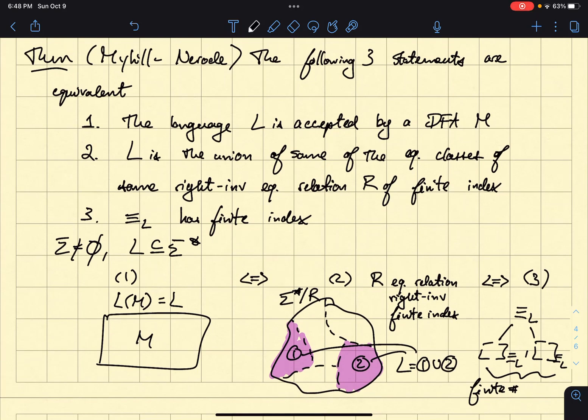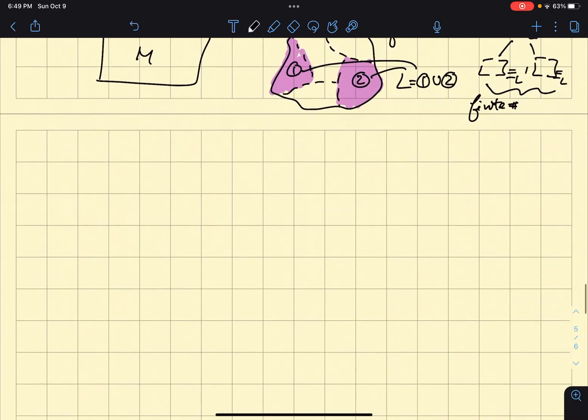All right. So how do we actually prove this? Well, because the statement says that one if and only if two if and only if three, we're just going to prove this using kind of a cyclic argument. So we're going to say, we're going to start with one implies two, then two implies three, and then three implies one. Okay. So that's how we're going to prove that. Okay.